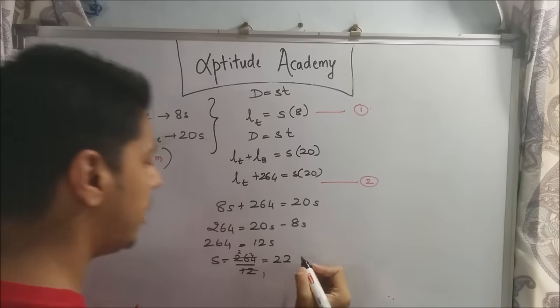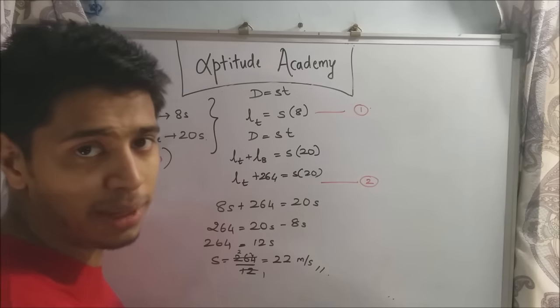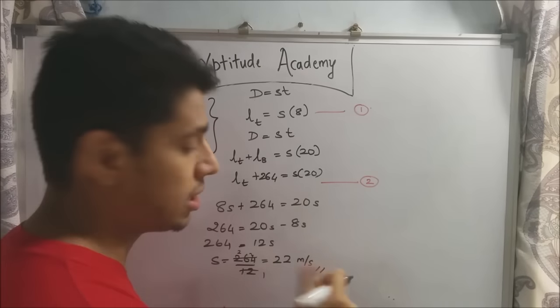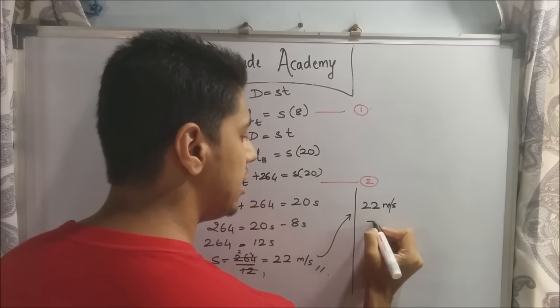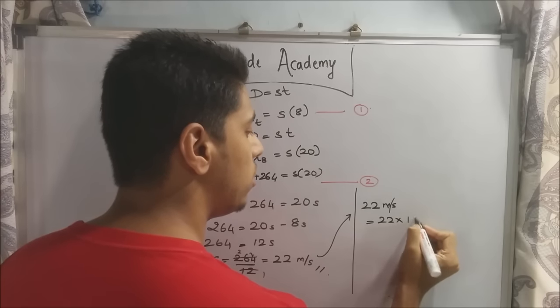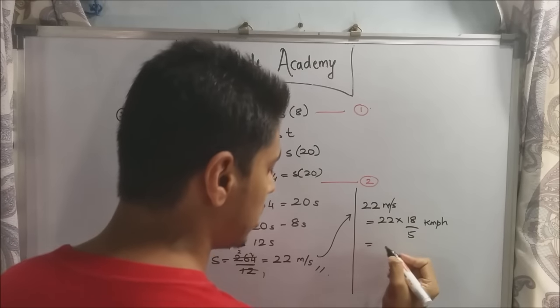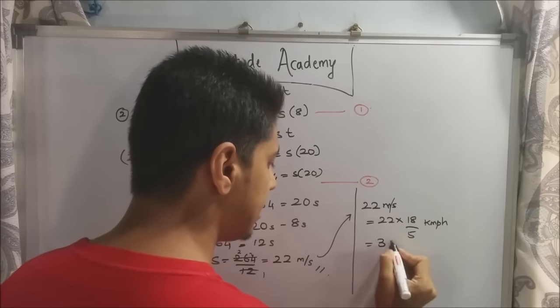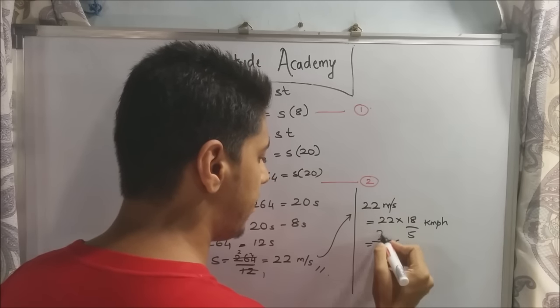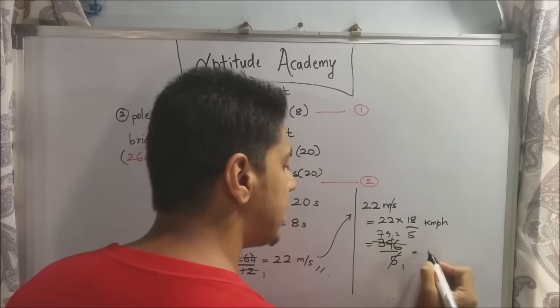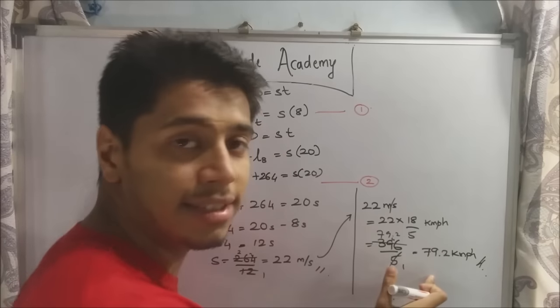22 what? It will be meters per second. But as I've told you, the standard for measuring speed is kilometers per hour. So you might not find 22 in your options. So what you do is just convert it. So 22 meters per second equals 22 into 18 by 5 kilometers per hour. So this will be 396 by 5. So that's 79.2 kilometers per hour. This is the answer.